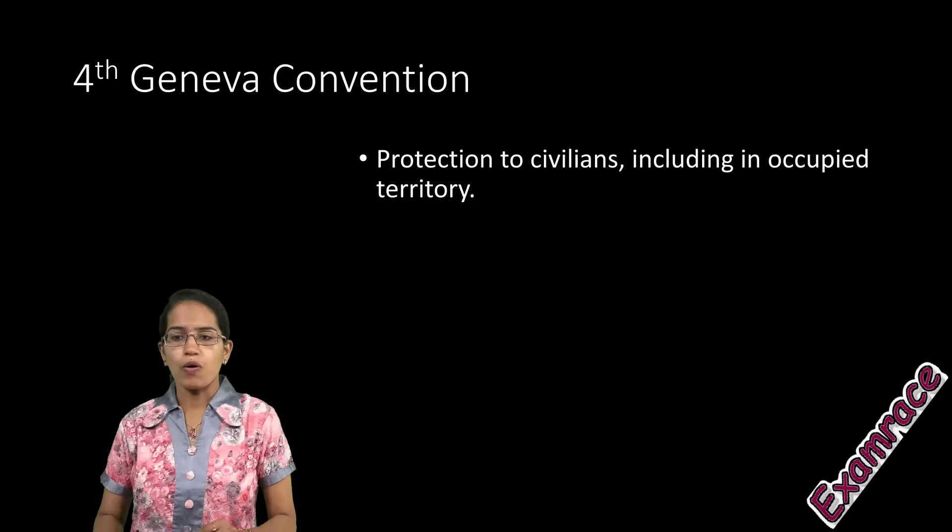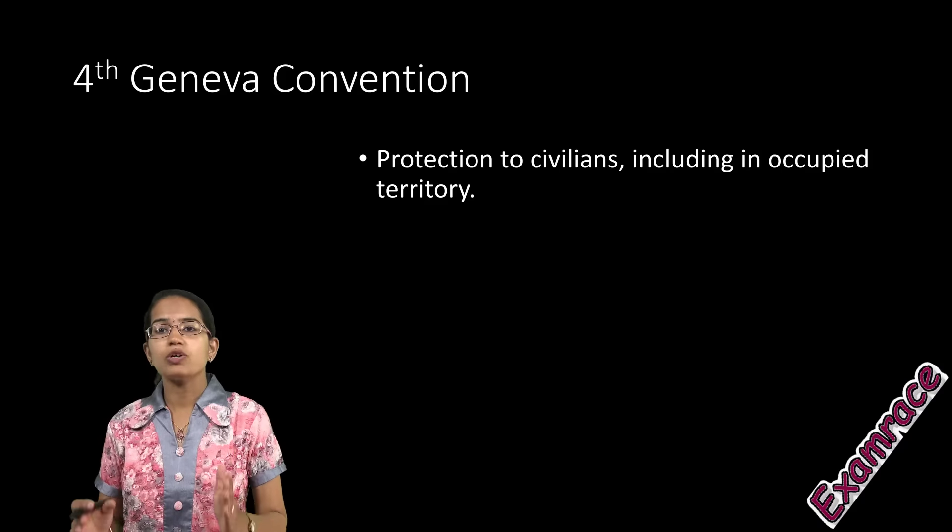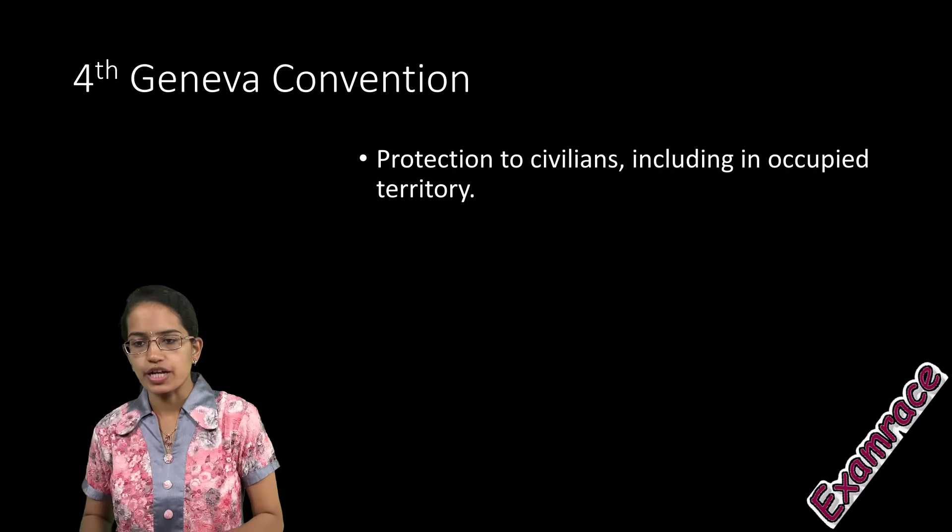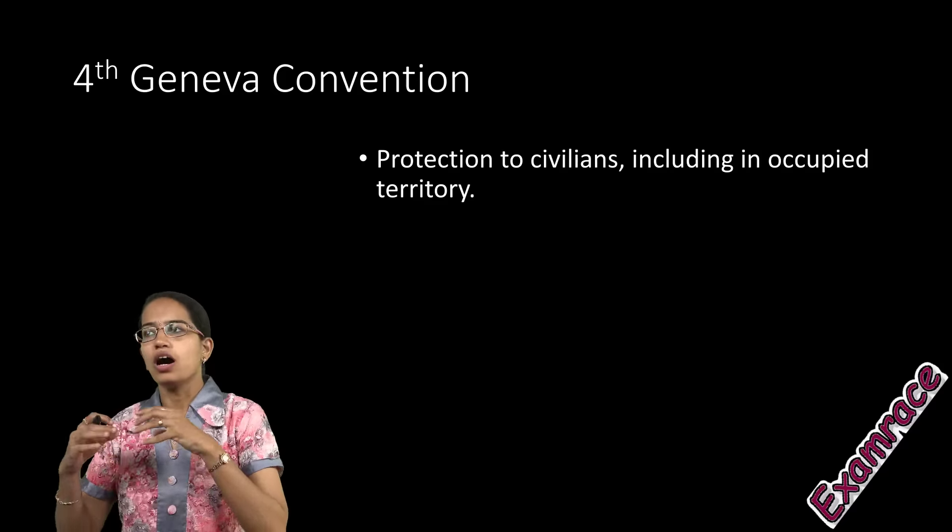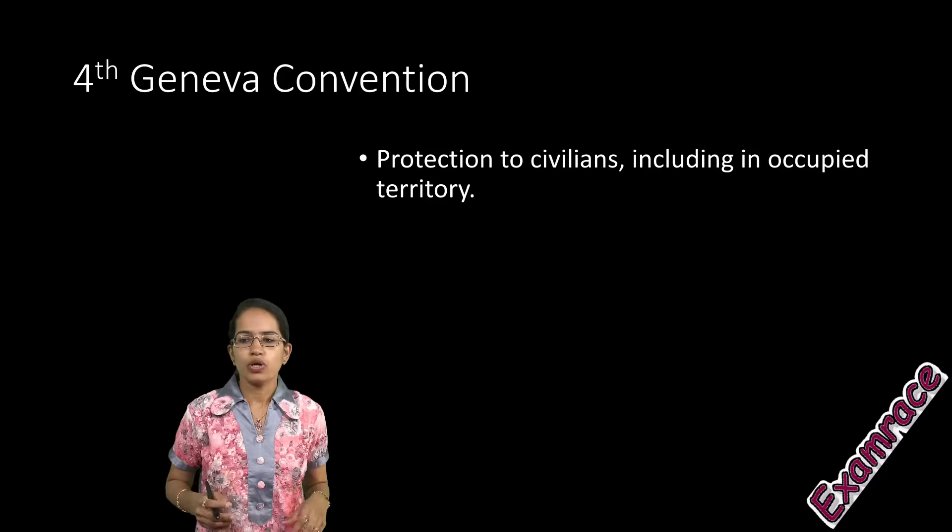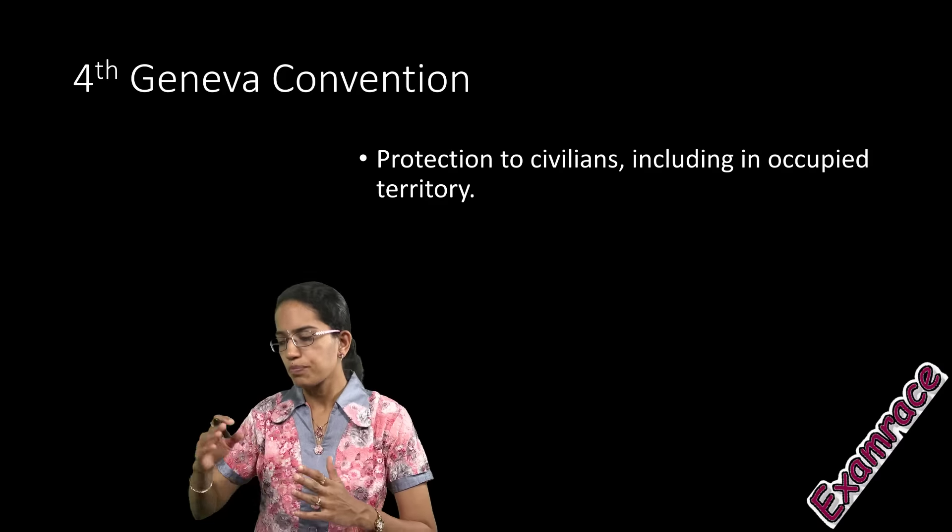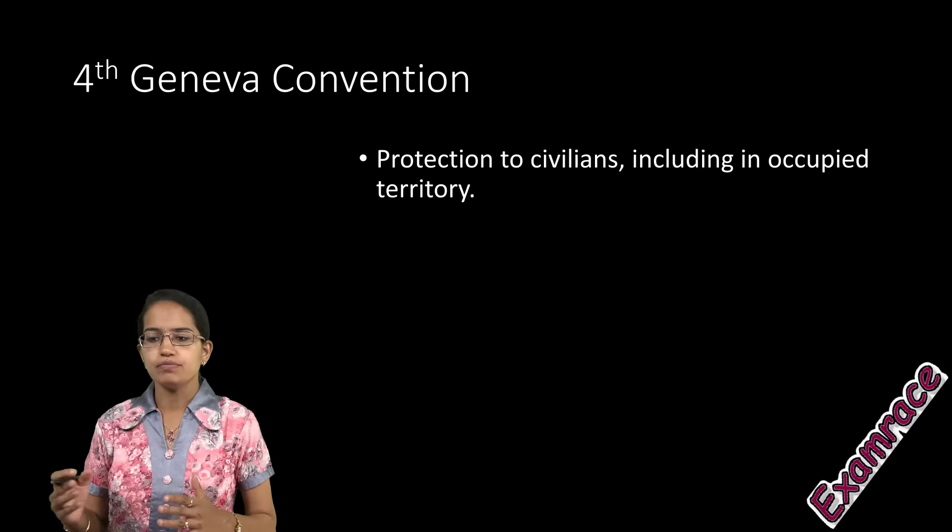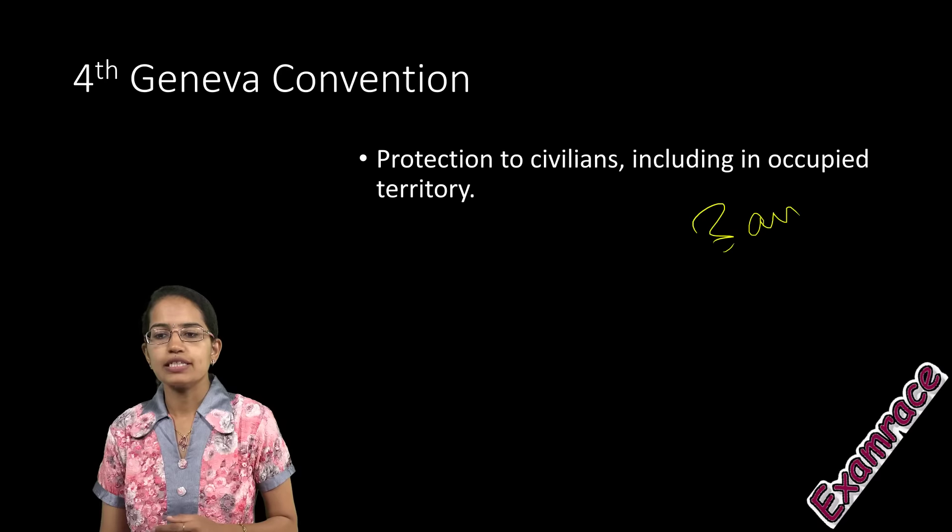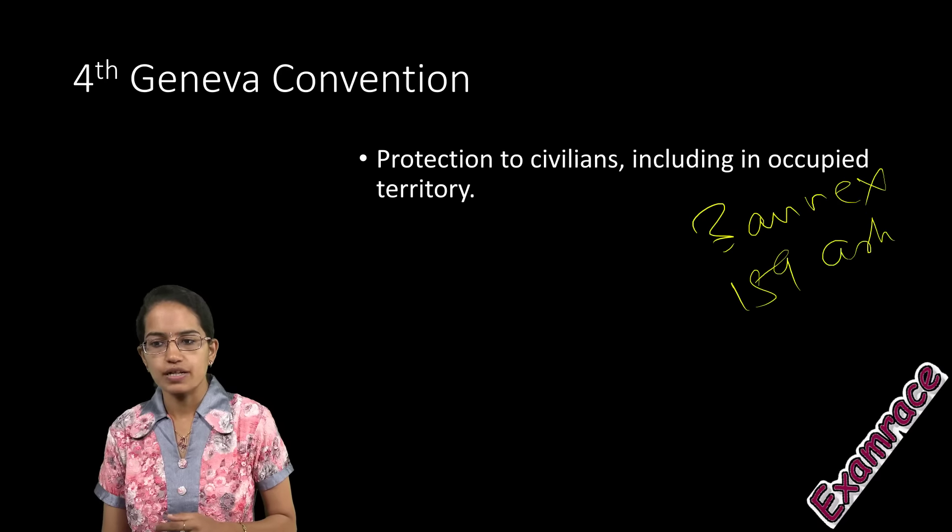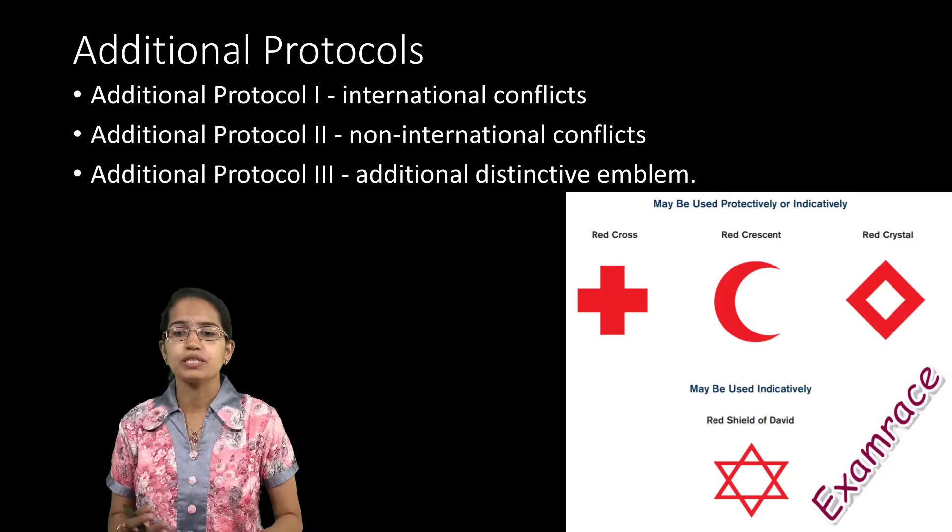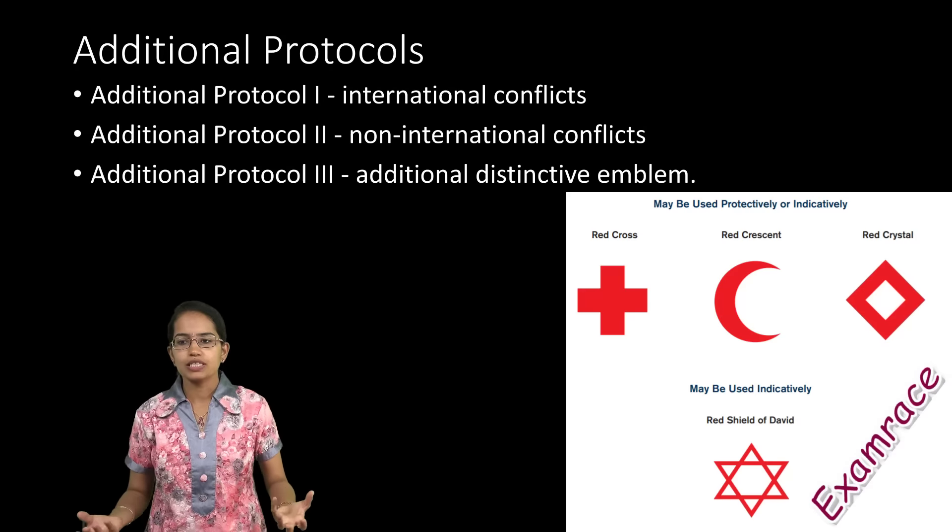The Fourth Convention came into force after World War II when it was realized that civilians are also badly hit during wartime. It provides protection of civilians in occupied territory, with general principles for protecting common people. It has three annexes and 159 articles for humanitarian cause and relief purposes.